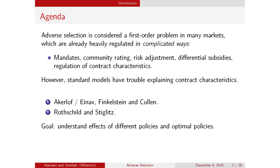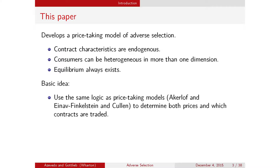The goal of the overall agenda that this paper fits in is that we would like to understand the effects of different policies. We would also like to understand what optimal policies look like—can we say what the best possible policies are, and how do they relate to the policies that people actually use? Today, this paper focuses on one half of this problem: we want to develop a price-taking model of adverse selection—a perfectly competitive model of how these markets work—that will determine which contracts unravel and which get traded, and at what prices.